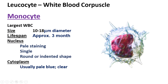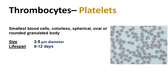Monocytes are the largest WBCs, varying in size from 10 to 18 micrometers in diameter. Their lifespan is approximately three months. They contain a single nucleus with pale staining that is round or indented in shape; the cytoplasm is usually pale blue and clear. Thrombocytes, also known as platelets, are the smallest blood cells, varying from 2 to 5 micrometers in diameter. The lifespan of platelets is about 8 to 12 days.